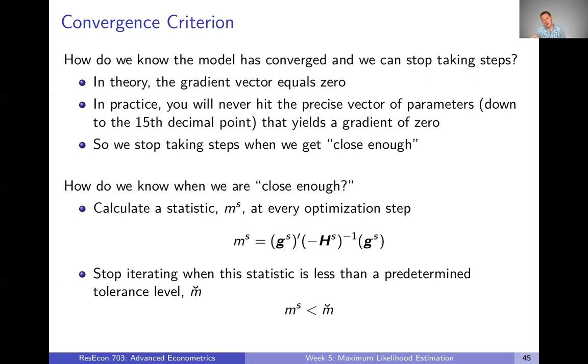And once that statistic gets smaller than that predetermined tolerance level, we stop. We say basically, we're going to keep going until we get to a point where our steps only improve us by so much or less. And when we get to that point, we're going to say, if our improvement is going to be that small, let's just say we're close enough.